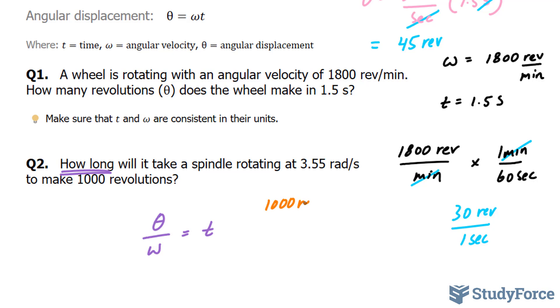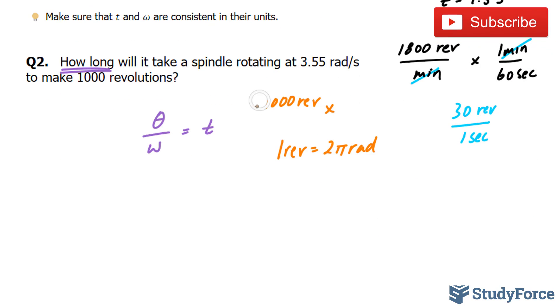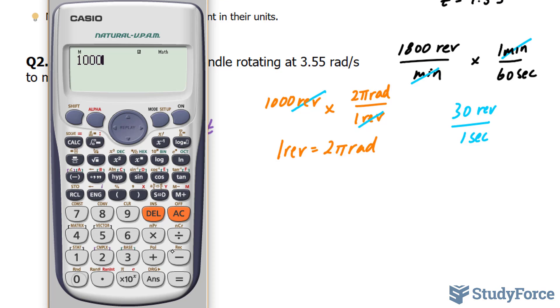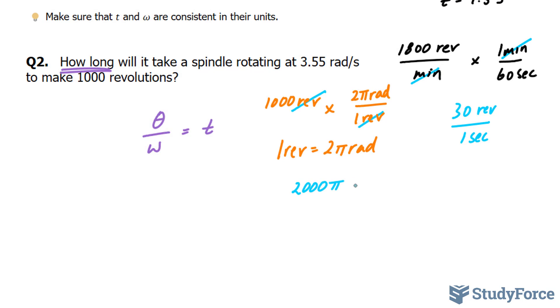1,000 revs times, and remember, 1 revolution is equal to 2 pi radians. Therefore, we would need to multiply 1,000 revolutions by 2 pi radians over 1 rev. This will cancel out the revolutions, giving us 1,000 times 2 pi. And we end up with 2,000 pi, that's in radians.